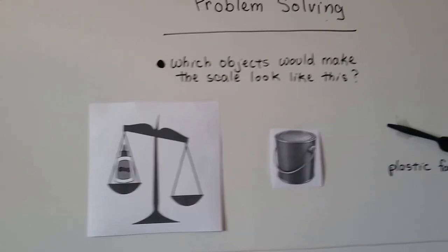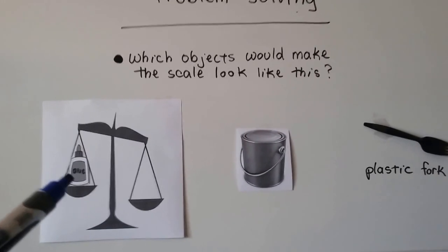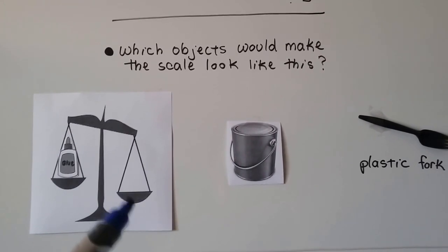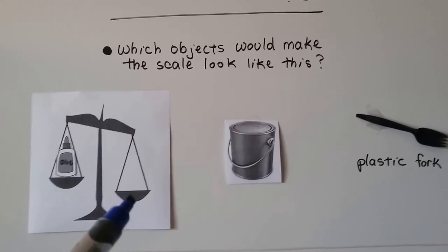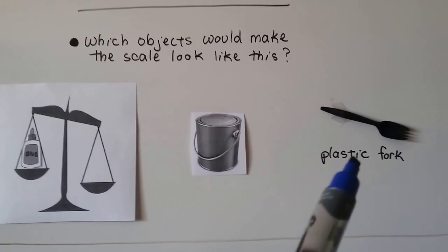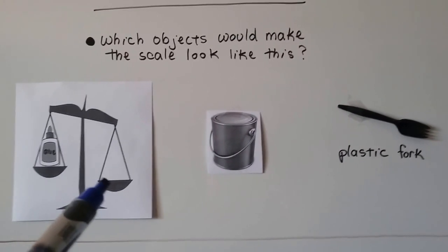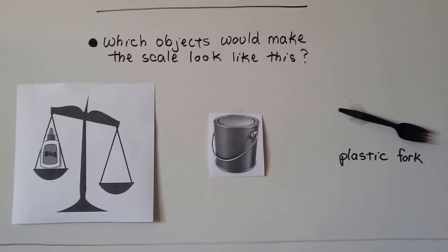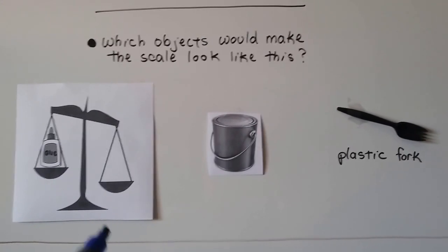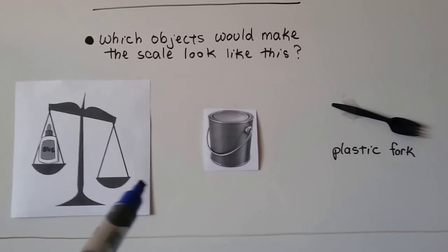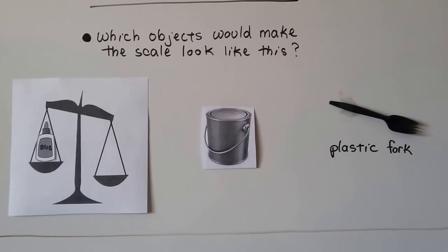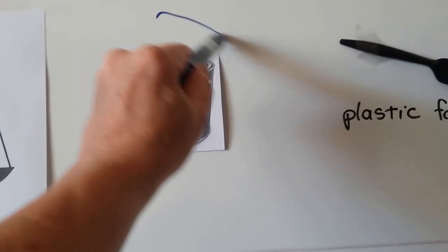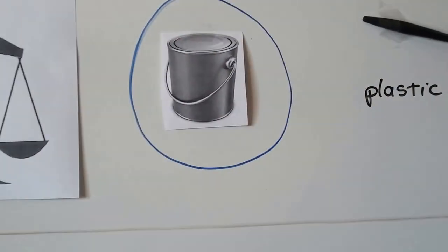Alright, let's try some problem solving. Here we have a scale, and we have a bottle of glue on this side. What would make the scale look like this? What would be on this side, this can of paint, or this plastic fork that would make the scale tip and look like this? Remember, the heavier side will go down. So what would be heavier than this bottle of glue? Well, if you said the can of paint, you're right. That would be a lot heavier than a bottle of school glue.